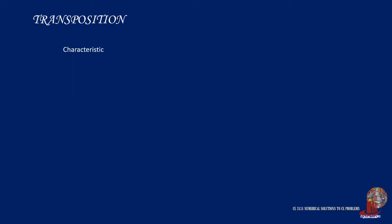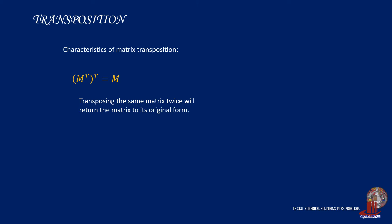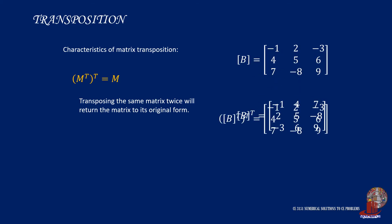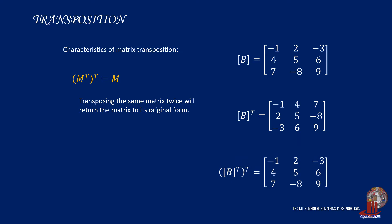Let's discuss the properties of transposition. First, the transpose of the transpose of a matrix brings it back to its original arrangement. To prove this with matrix B: starting by taking its transpose, then taking the transpose of the resulting matrix, we can see that the arrangement of elements reverts back to the original.